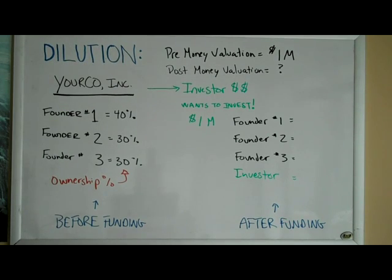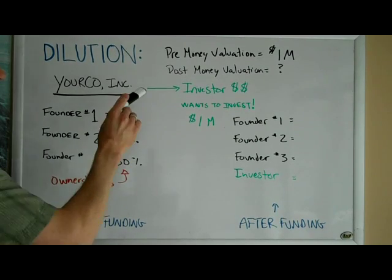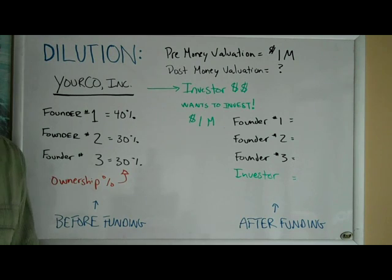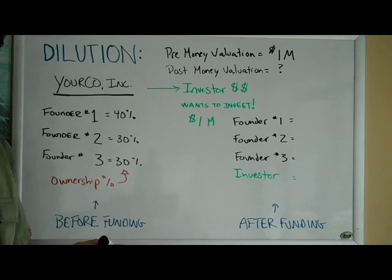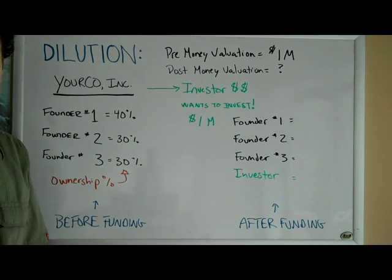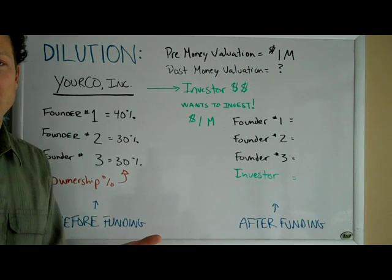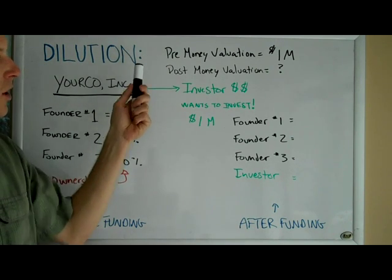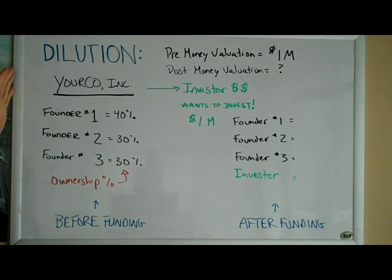Let's start with pre-money and post-money valuation. These are two important concepts as an entrepreneur that you should understand. Pre-money valuation is the value of your company before you raise funding. Post-money valuation will be the resulting value of your company after you raise money. A simple way to think about that is if your company is worth a million dollars before you raise funding and you raise a million dollars, now you have the exact same company with a million dollars in the bank, so now it's worth two million dollars. You get that number by adding your pre-money valuation with the amount of money that your company raises.